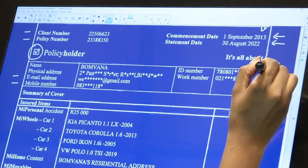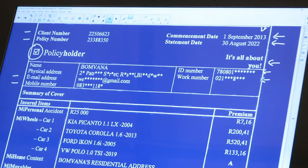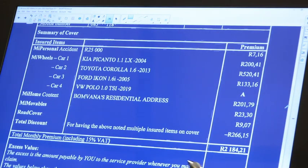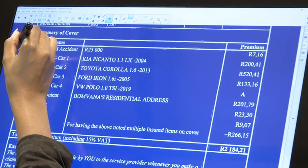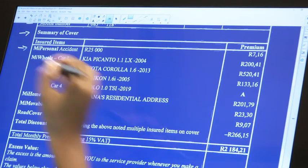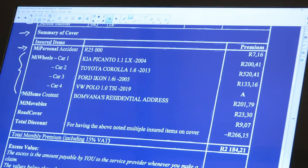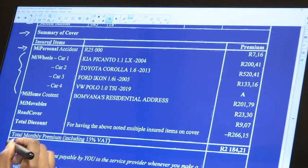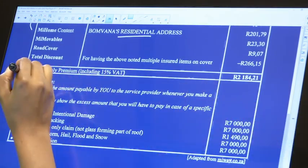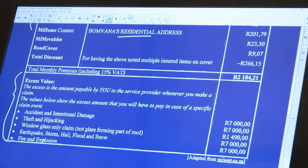Summary of cover shows this person has 25,000 rand cover with all the features listed. We've got car 1, car 2, car 3, car 4, and home content at the residential address. This is quite important to read and understand. Excess value - whenever you are asked to pay excess on something, the definition is there.